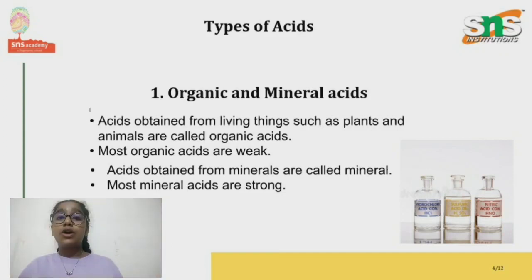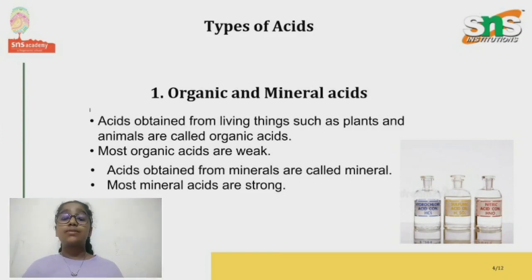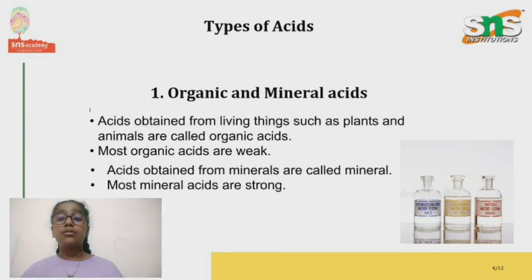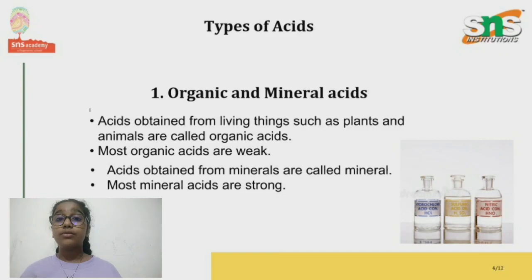First let's see organic and mineral acid. Acids obtained from living things such as plants and animals are known as organic acids, and most organic acids are weak. Some examples are citric acid from lime, lemon and oranges; malic acid from apple; amino acid from proteins; and lactic acid from milk products, and there's more.